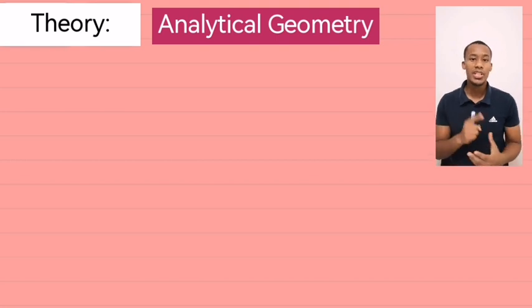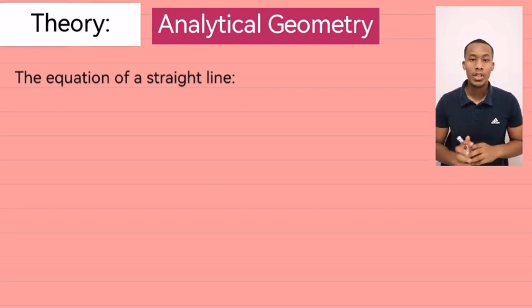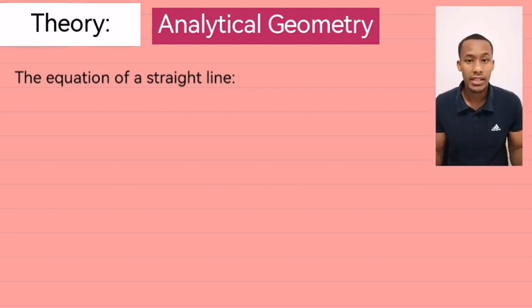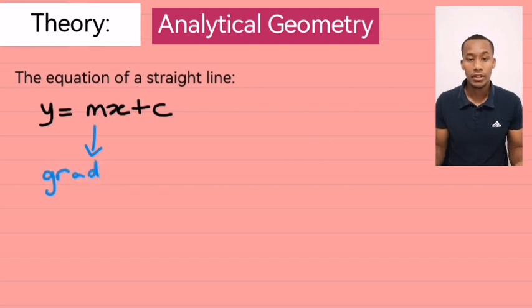Okay, so the first thing we're going to look into is the equation of a straight line. So, the equation of a straight line can be written as y equal to mx plus c. Now, m is the gradient of the line.